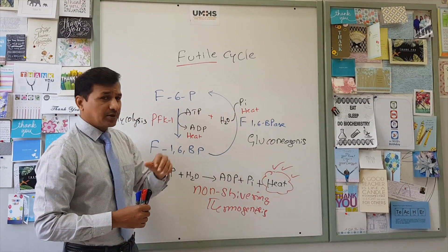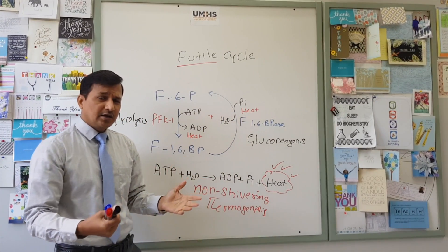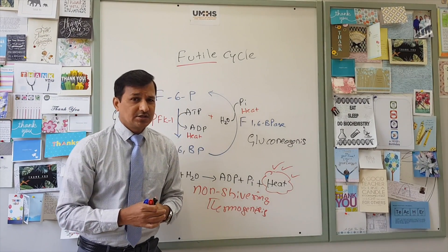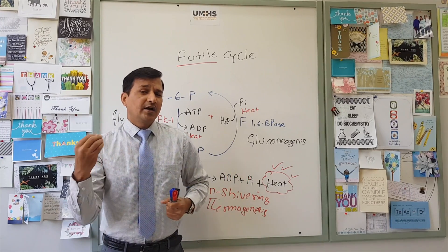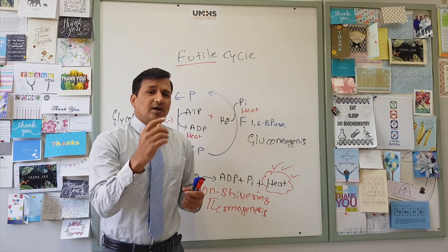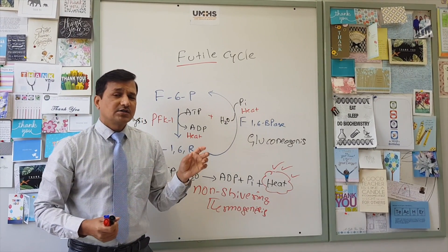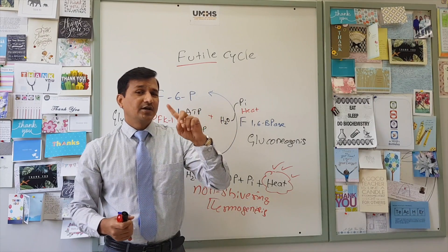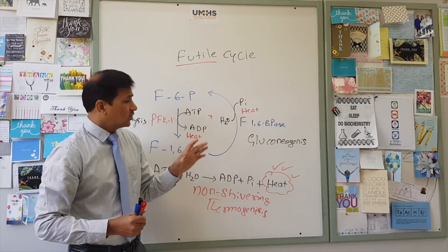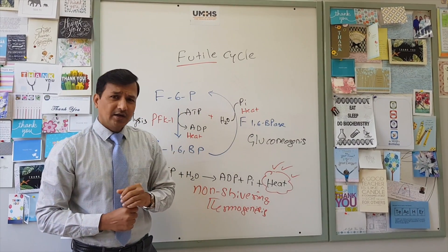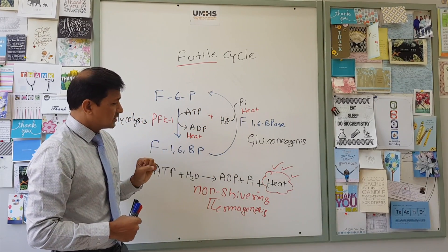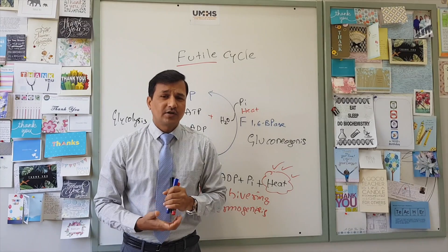This is just one example of a futile cycle. Another example is glycogen breakdown and glycogen synthesis — glycogenolysis and glycogenesis. Both are opposing pathways, and if you run them simultaneously, there will be generation of heat, because UTP is converted into UDP, and UDP is further converted into PPi and so on. There will be a release of energy in the form of heat. This is the concept referred to as a futile cycle.